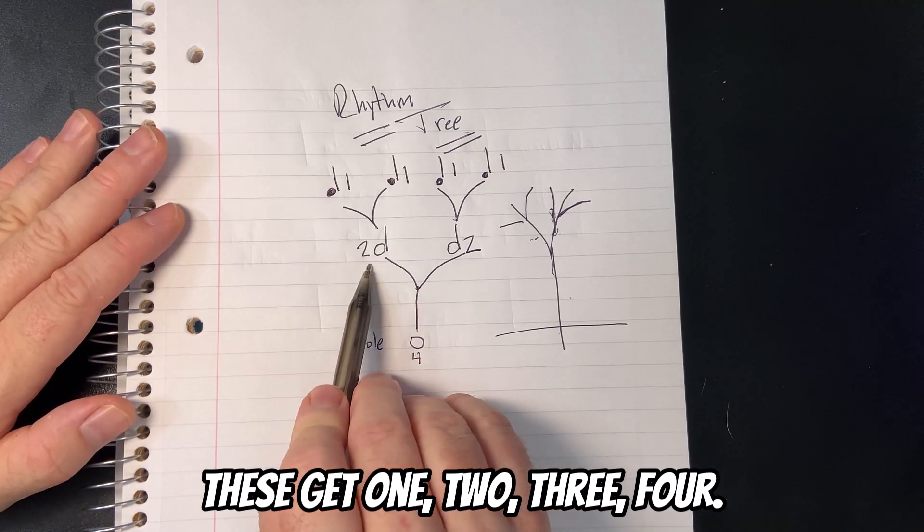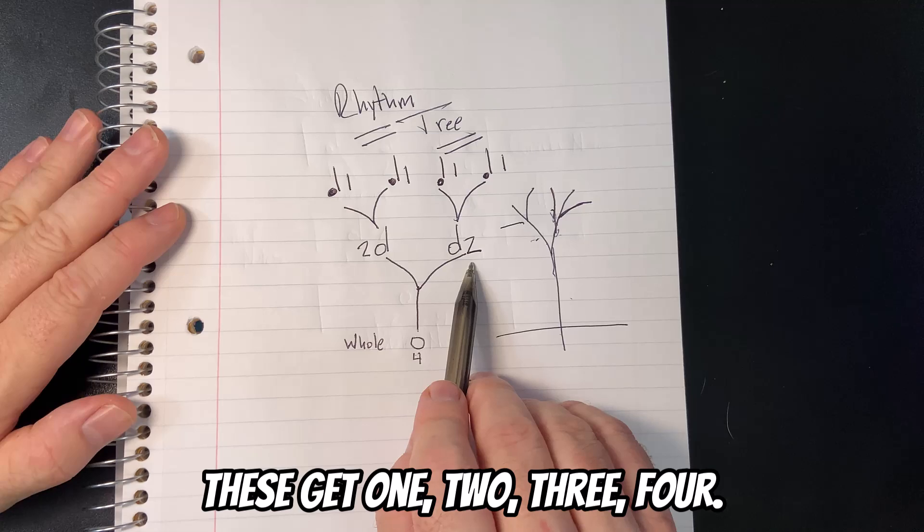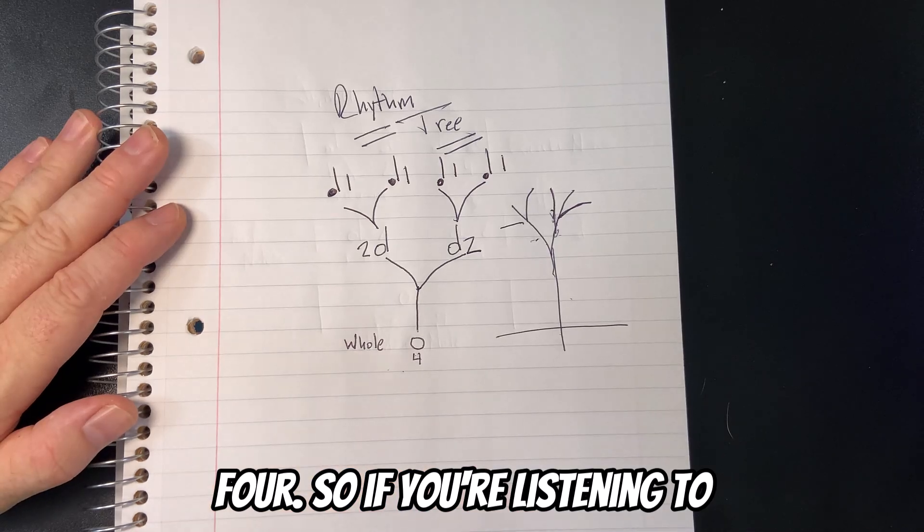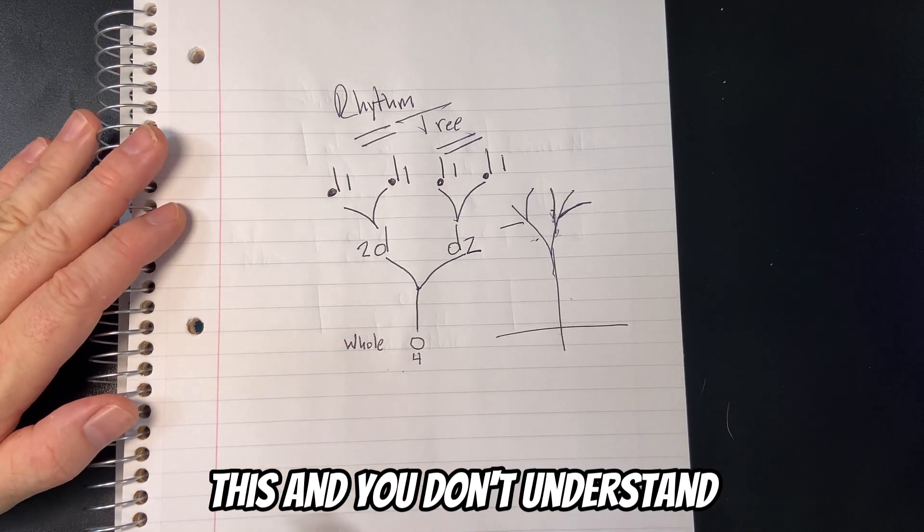And those half notes, or those branches, separate even more so. So that takes us to where we started, where we had our original pulses. So we got notes that look like this. These are like our original pulses. And these get one beat at a time: one, two, three, four.